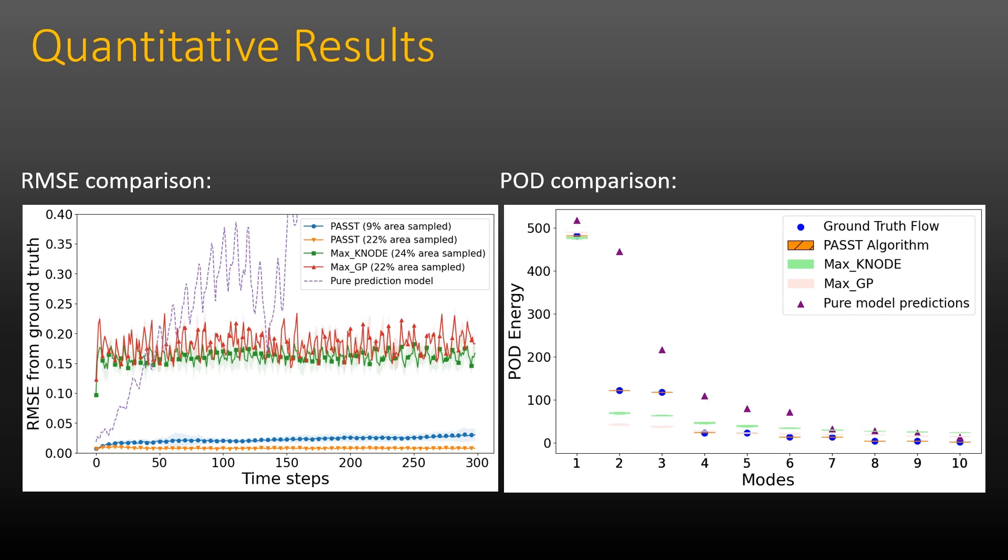Our algorithm between the ground truth and temporal estimates of the fluid process provides an insight into the spatial similarity index captured in samples collected. POD compares the energy distribution between the estimated flow and the ground truth process, thus capturing the spatio-temporal similarity index.